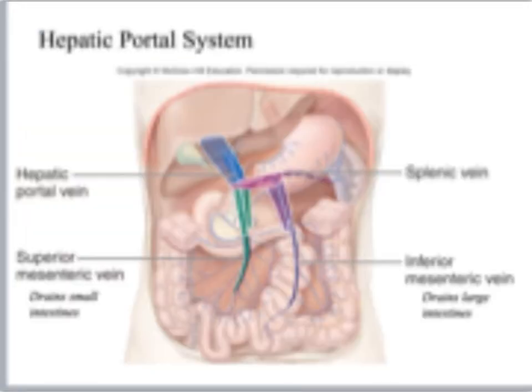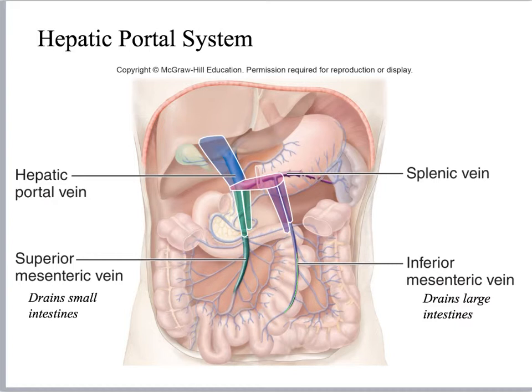What I like about this picture is the way they have highlighted and circled the structures so you can easily see the inferior mesenteric vein and the splenic merging, and then the splenic and the superior mesenteric merging, then going into the hepatic portal vein. So those are the basic structures of the abdominal vessels. That's the end of unit five, and the next unit will be looking at the lower body vessels.